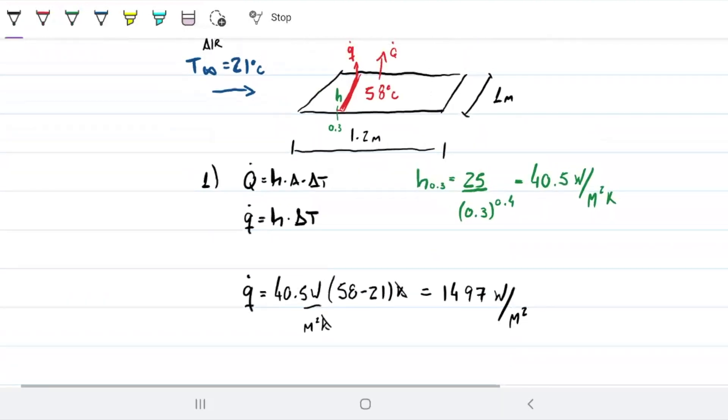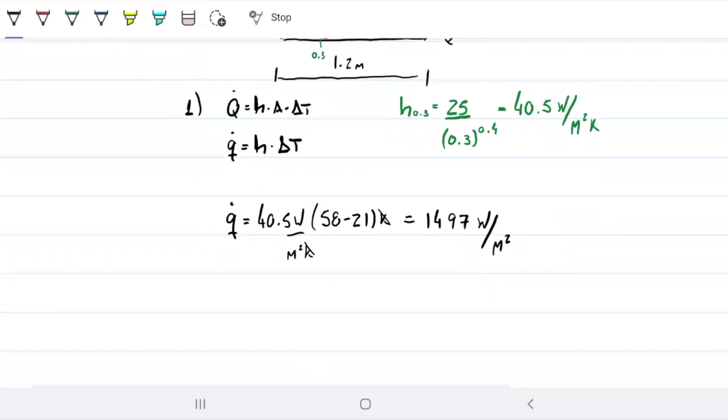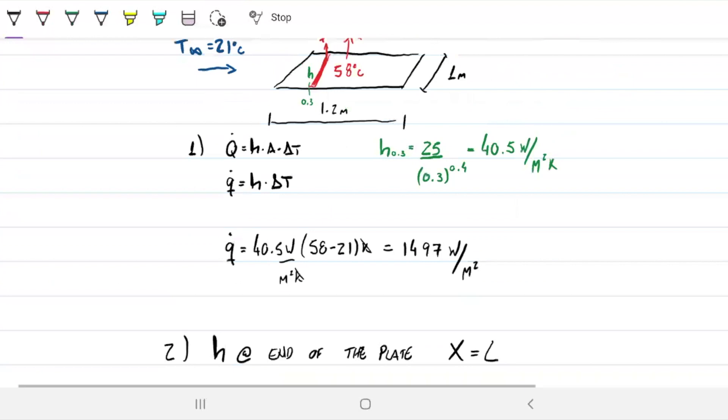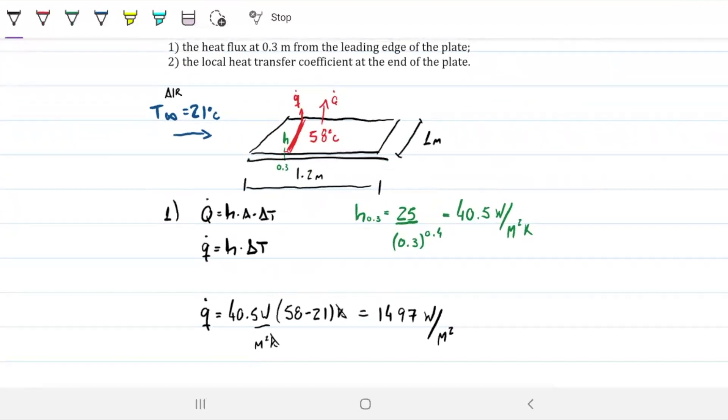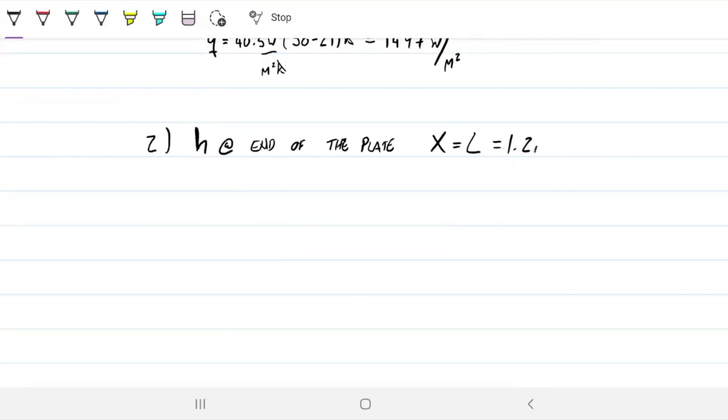Now part two. Part two says, what is the local heat transfer coefficient at the end of the plate? What is H at the end of the plate? And what we know is that x at the end of the plate equals L. X at the end of the plate is just the length of the plate, because we know x is just a vector that's leaving from here. And then if we go to the end of the plate, that will be just L. So in this case, it's L, which for our example is 1.2 meters.